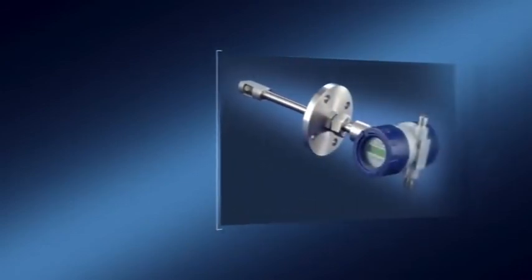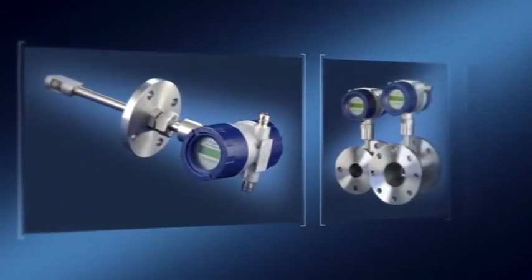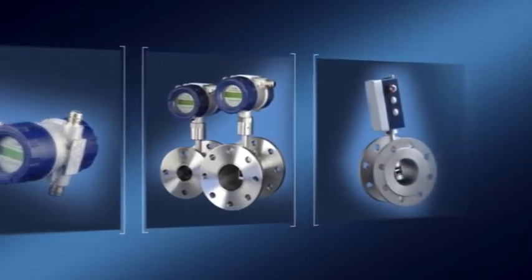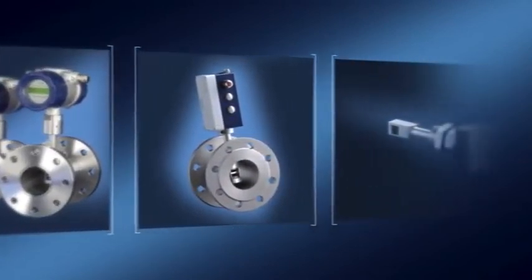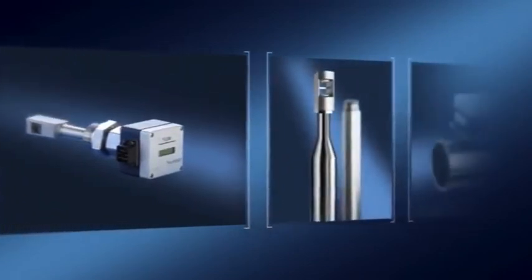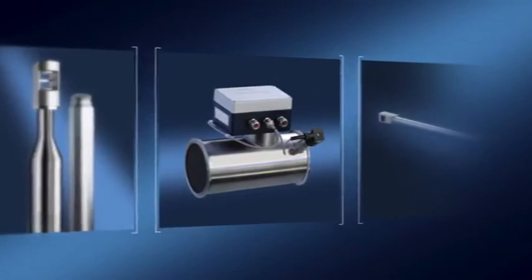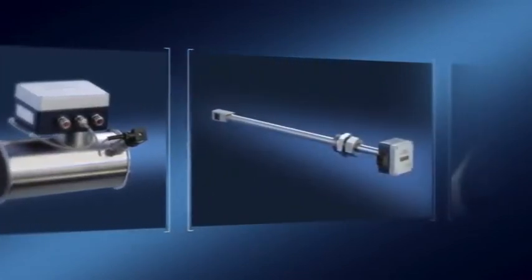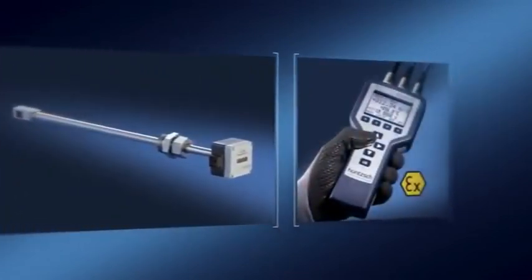We offer our vortex flow sensors in form of insertion probes for variable insertion depth or inline measuring tubes. Each one is individually produced according to our customers' wishes, for example, with stainless steel, Hastelloy, titanium, or tantalum.